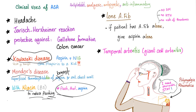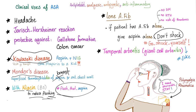You can give aspirin for lone AFib — if the patient has AFib alone, give aspirin alone. Forget about warfarin, ablation, surgery, all of that. Aspirin is also good for temporal arteritis, but don't forget the steroids.